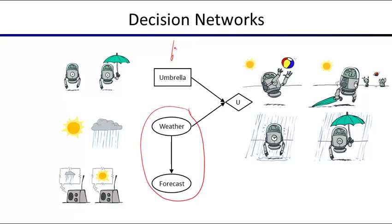Then we have a new type of variable sitting in a rectangle — those are action variables. These are not random; these are ones that your agent gets to pick. In this case, you get to pick between bringing an umbrella or not bringing an umbrella. The last type of node is a utility node, and that utility node encodes how much utility you get for a certain outcome. These are the same kind of utilities we've seen at the bottom of expected max trees.